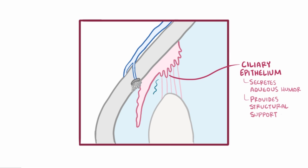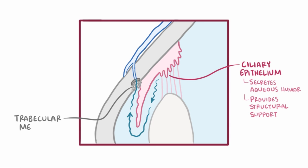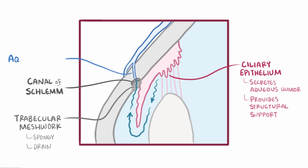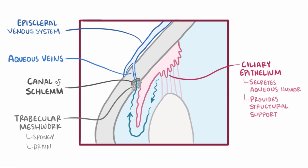That fluid is secreted into the posterior chamber, and then flows through a narrow space between the front of the lens and the back of the iris, through the pupil to the anterior chamber. From there the fluid flows out of the eye through the trabecular meshwork, which is a spongy tissue that acts like a drain. This allows the fluid to go down into a circular channel called the canal of Schlemm, and finally into the aqueous veins, which are part of the episcleral venous system — the veins around the sclera of the eye.